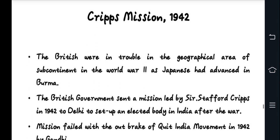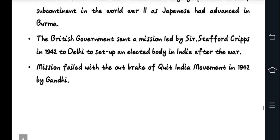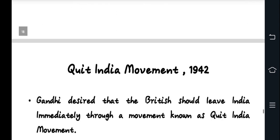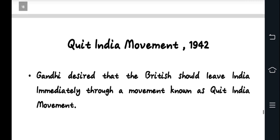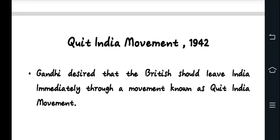Next, the Cripps Mission and the Quit India Movement. In 1942, the Cripps Mission sent British representatives to India to discuss post-war self-governance. The mission failed, and the Quit India Movement demanded that the British leave India, intensifying the struggle for independence.